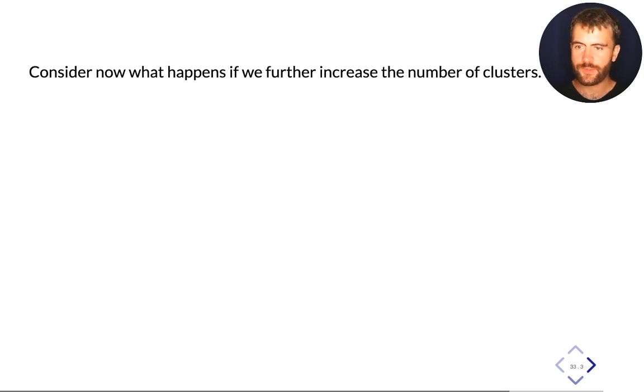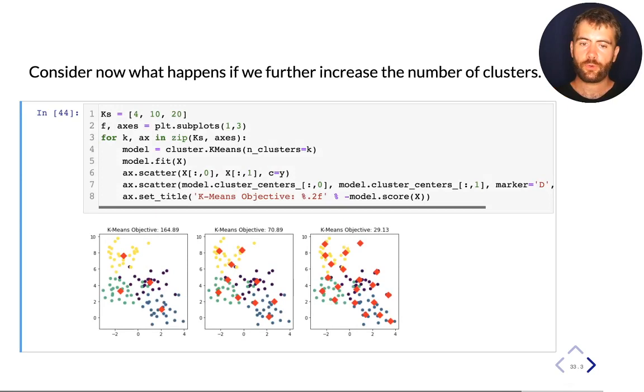And of course, to mitigate this problem, we can increase the number of clusters. So if we increase the number of clusters to four, we have something which looks like this, which actually recovers a lot of the structure that we have seen in this data, but we can keep going. And also this improves our objective. It goes from 462 to 164. We can also keep going and get 10 clusters in the data and we can keep going and get 20 clusters in this data. And now our objective is really small.